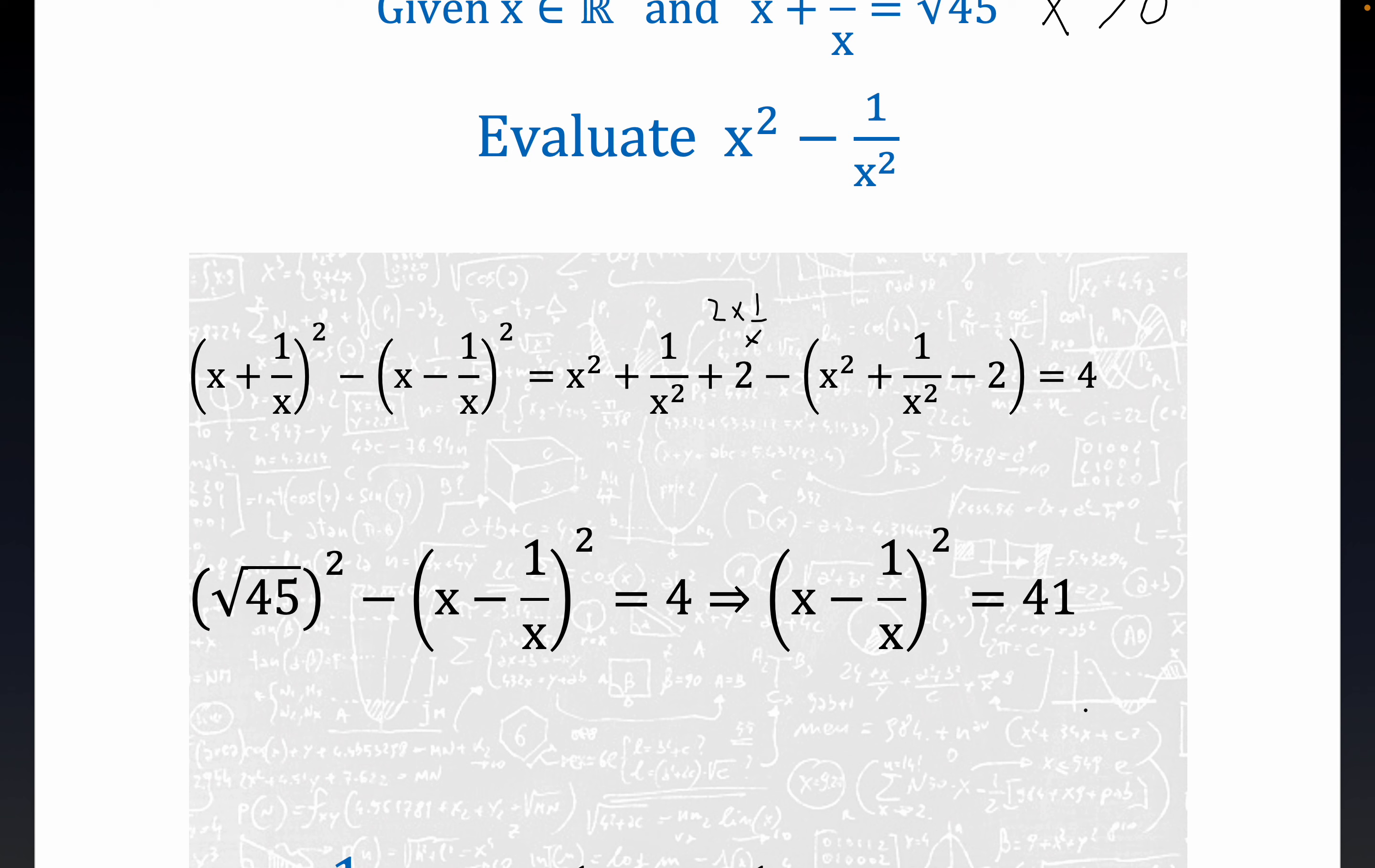Now, notice right here, you can take the plus and minus square roots, so you would get right here, x minus 1 over x is equal to plus or minus the square root of 41. So let's go down.